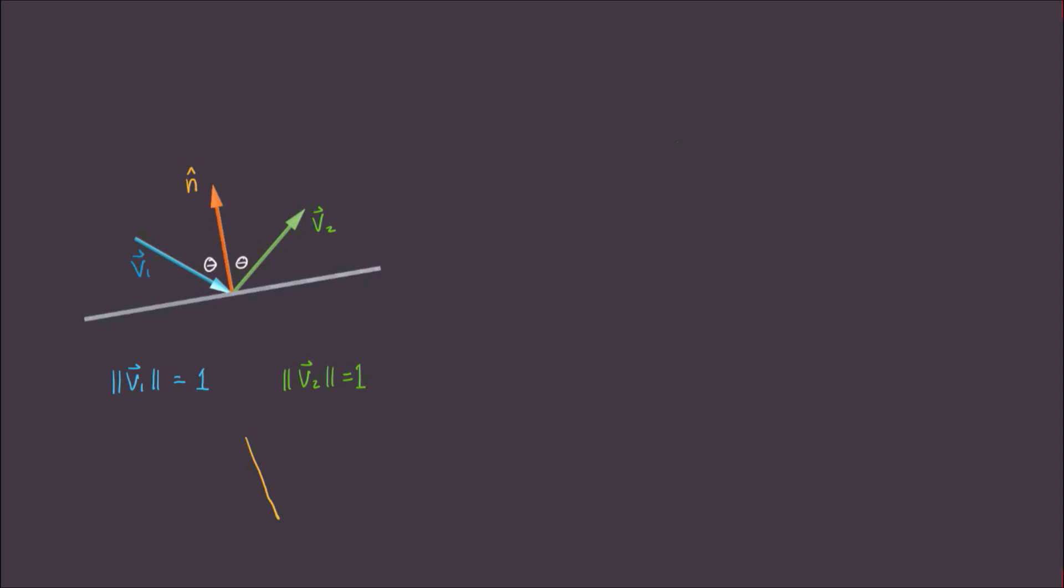Cosine theta can be found by drawing the vectors n and minus v1 again, side by side. The angle between these two vectors must be theta. Now we can use the angle between vectors formula to find cosine theta directly. We know that cosine theta must equal minus v1 dot n divided by the magnitude of v1 times the magnitude of n. Well, the magnitudes of both of these vectors are 1 by definition, so that means that cosine theta is equal to minus v1 dot n. And let's call that equation 2.